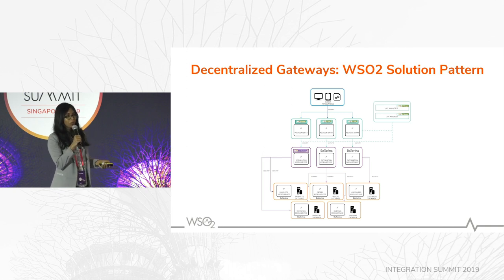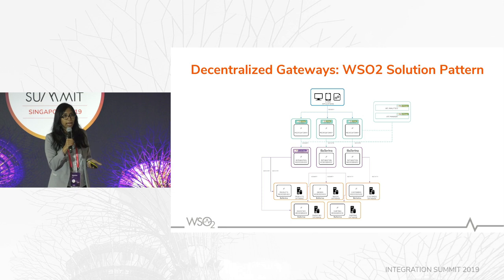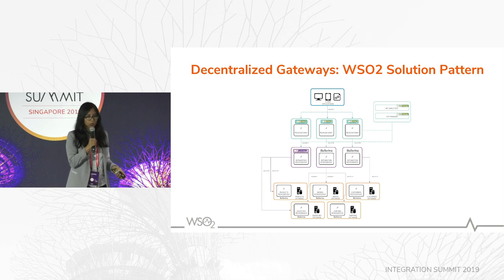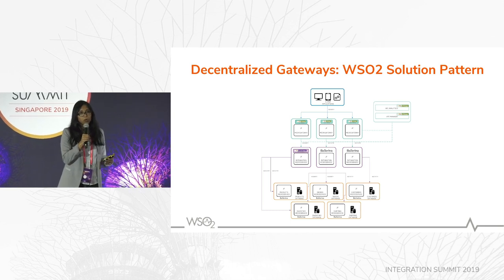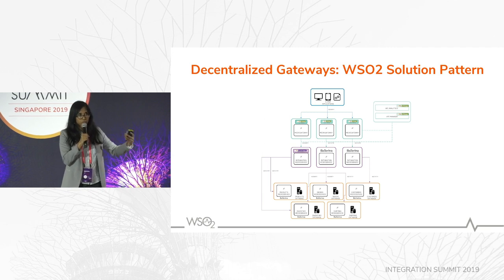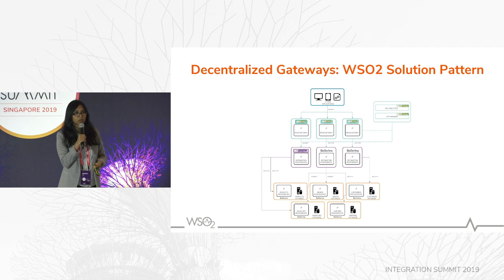The microgateway can be easily scaled because it does not maintain live connections with the components of the control plane. It supports offline analytics, in-memory traffic control, and self-validating tokens. The microgateway is also very developer-centric — microservice developers themselves can create an OpenAPI specification for their microservices to expose them as REST APIs as part of the development flow. They don't need to wait for another developer to come and expose those microservices as REST APIs.